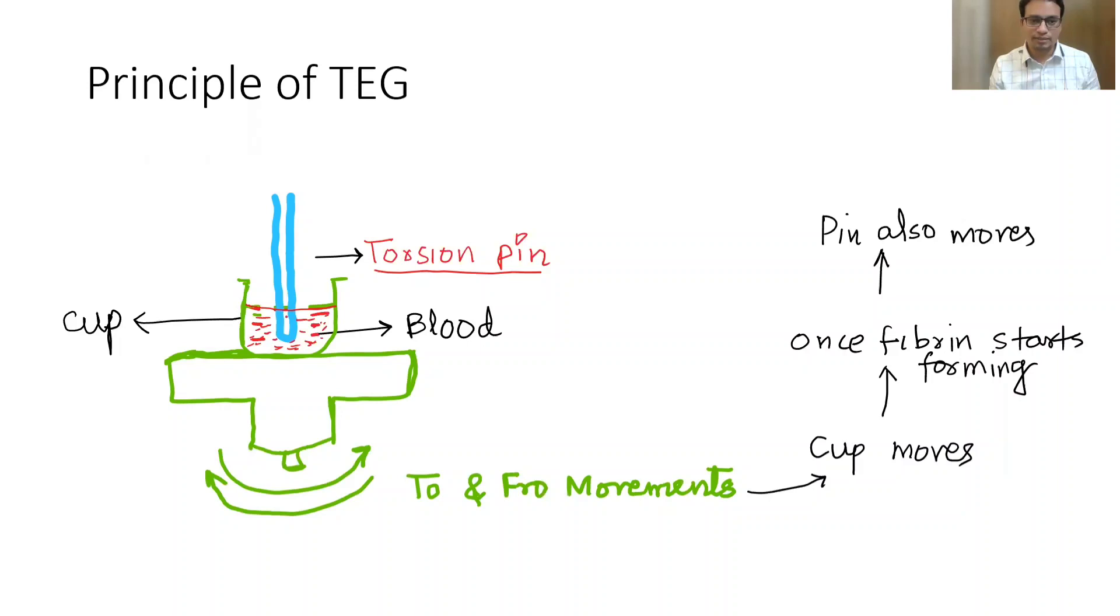The cup is then rotated with the help of a motor. There will be to and fro movements of this cup and it will be rotating all the time. Once the clot is formed in this blood, then this movement of the cup will be transmitted to the torsion pin.